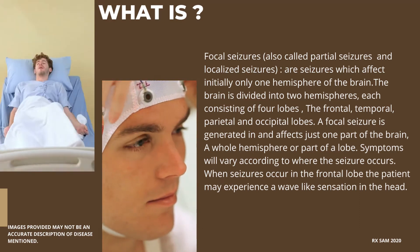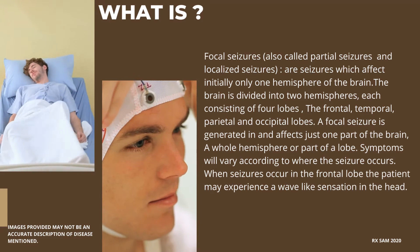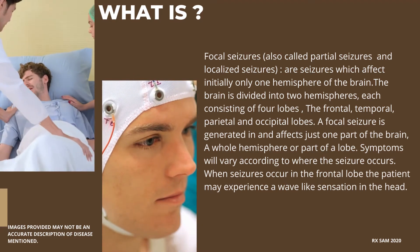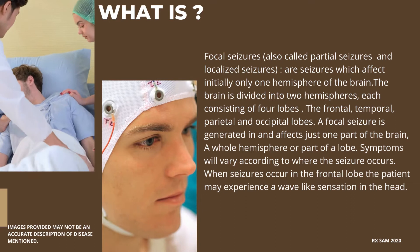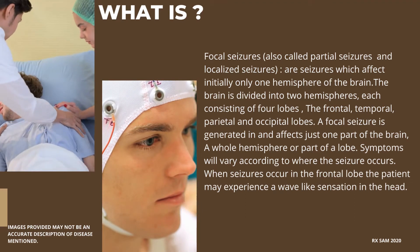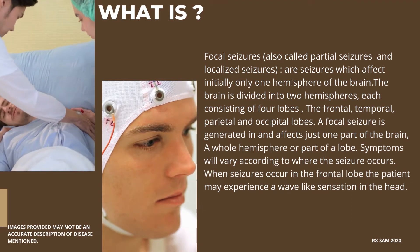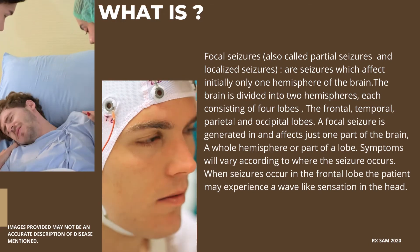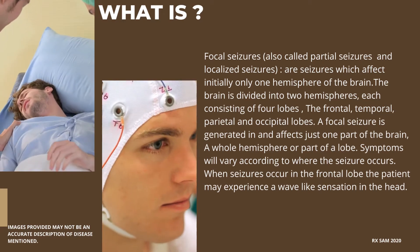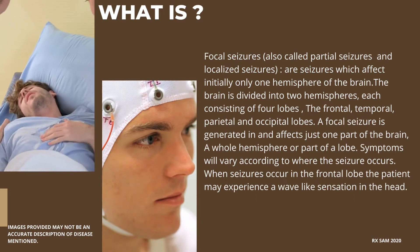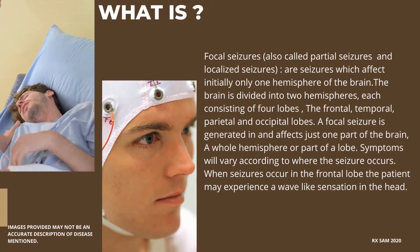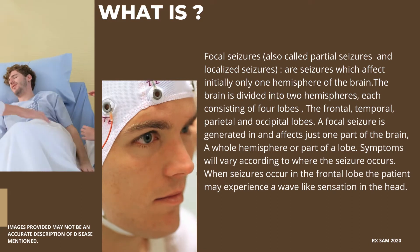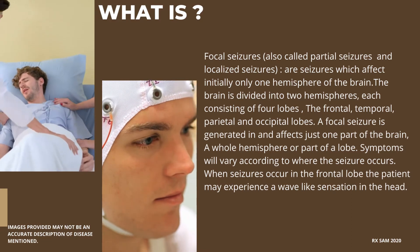Each hemisphere consists of four lobes: the frontal, temporal, parietal, and occipital lobes. A focal seizure is generated in and affects just one part of the brain — a whole hemisphere or part of a lobe. Symptoms will vary according to where the seizure occurs. When seizures occur in the frontal lobe, the patient may experience a wave-like sensation in the head.